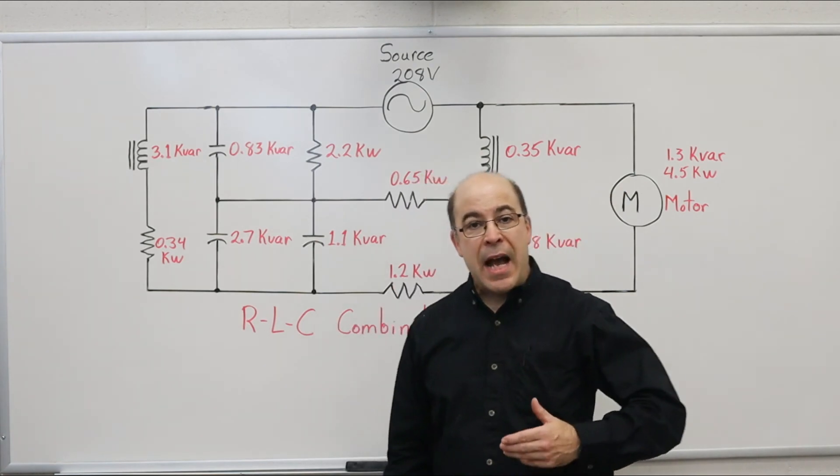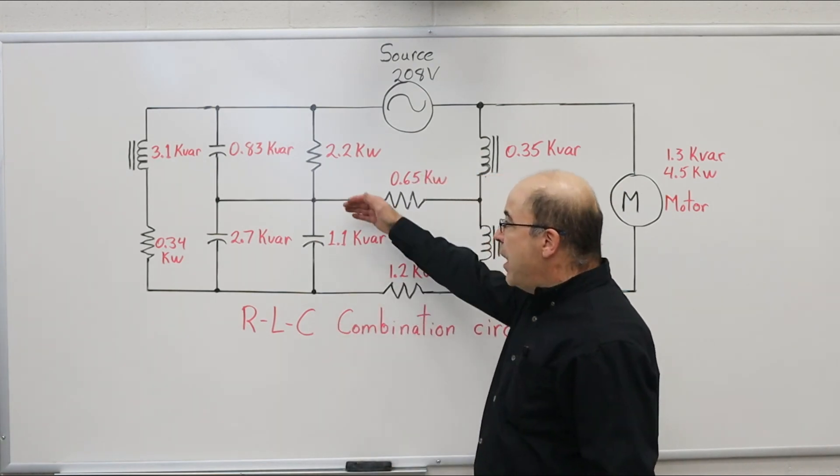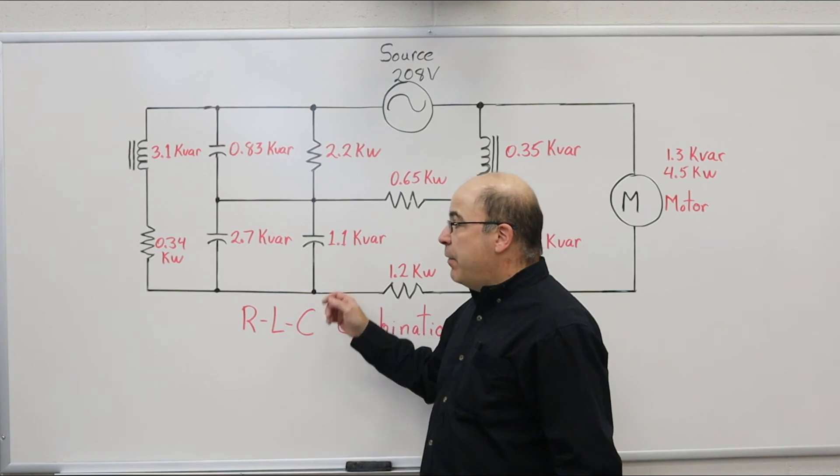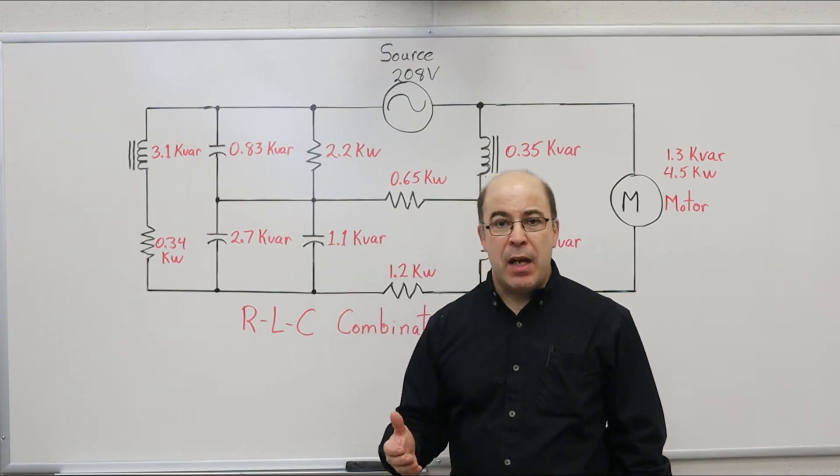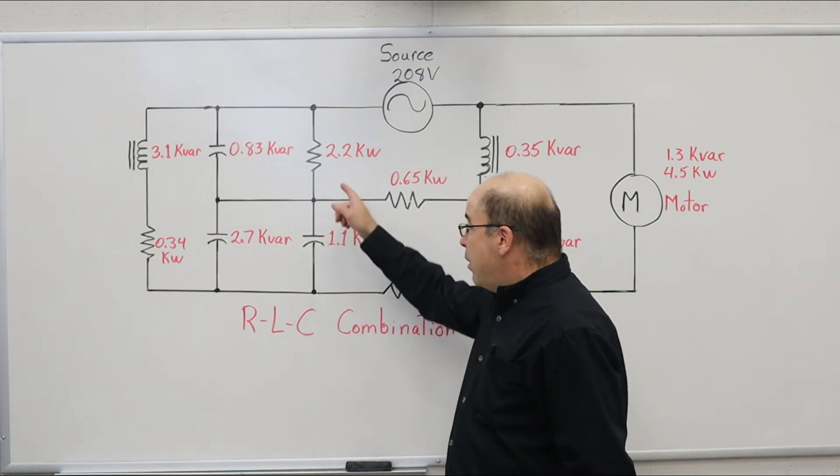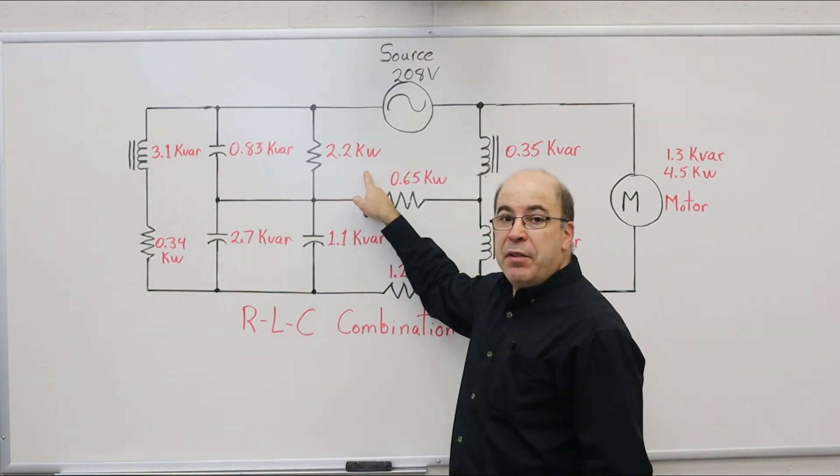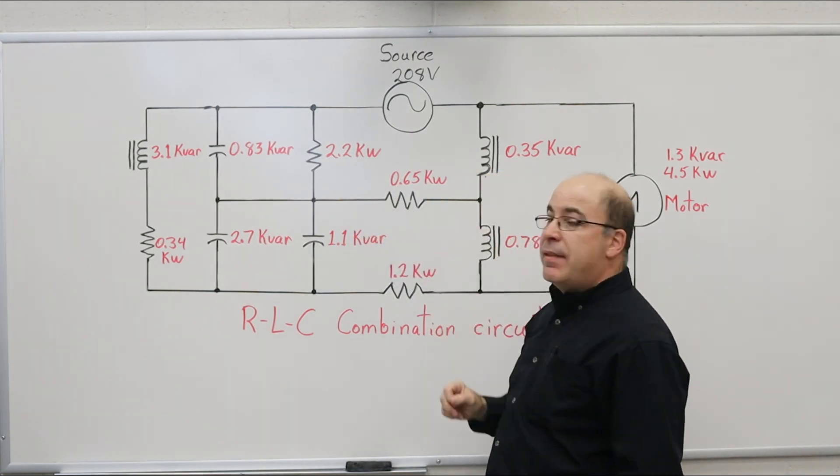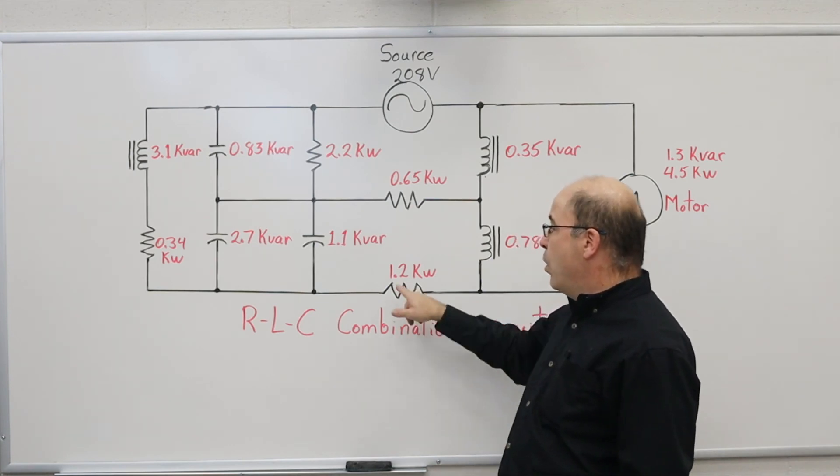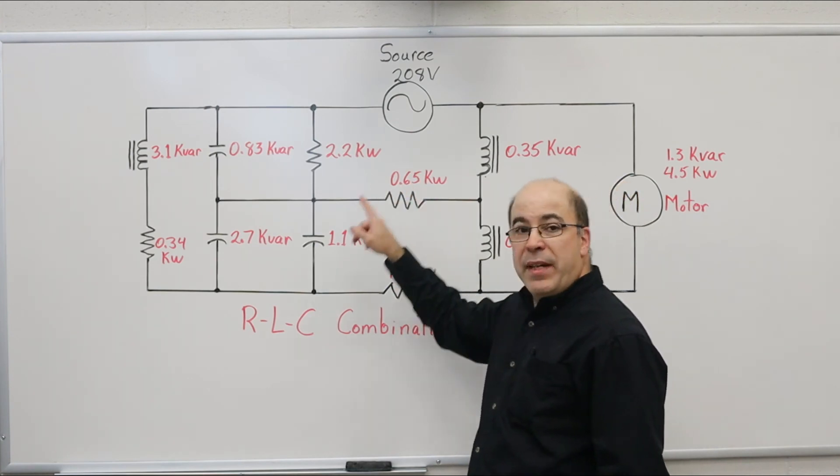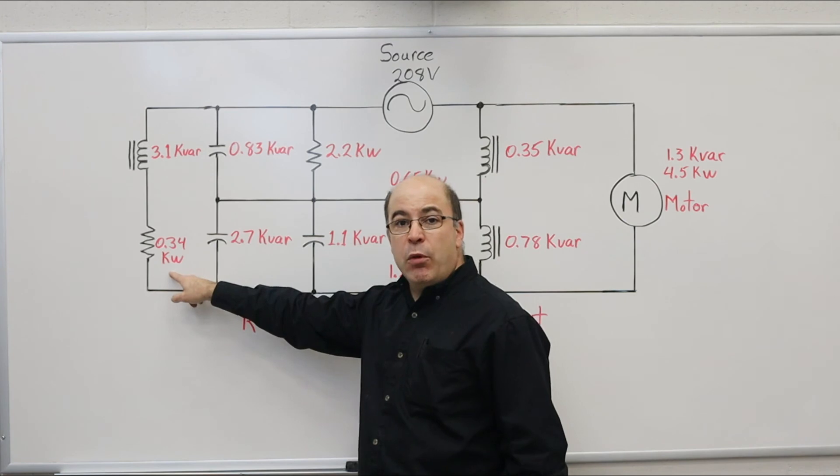The first thing I want to do is break down this circuit by the different types of components. I'm going to take all the values of resistance. So we've got 2.2 kilowatts, 0.65 kilowatts, 1.2 kilowatts, and we can't forget 0.34 kilowatts.